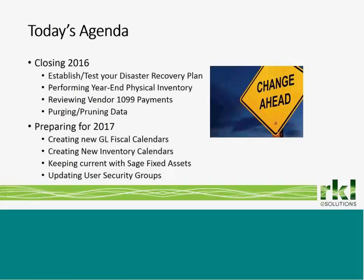Our agenda is listed on this slide here. We're going to have a brief touchpoint on disaster recovery plans, then talk about doing physical inventory — everybody's favorite topic — 1099s, and then purging or pruning data in 2016. Before we roll into getting ready for 2017, where we'll talk about setting up a new GL calendar, a new inventory calendar, Sage Fixed Assets, and doing some housekeeping on user security groups.